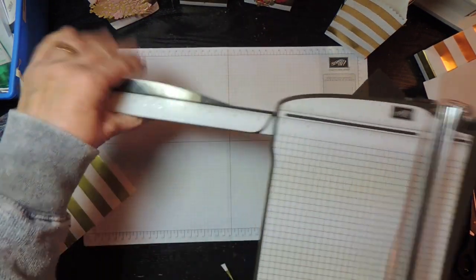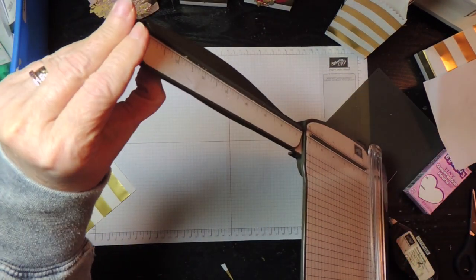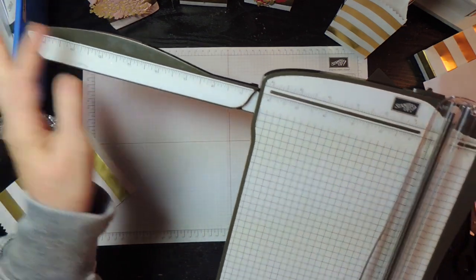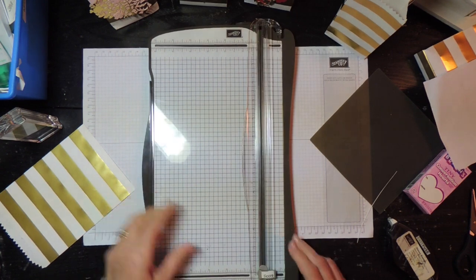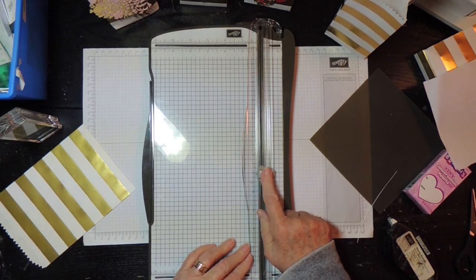We've got a nice extension here and it even stays up straight with this little clip on the bottom. It goes out to 12 inches and also, which is important for today, has a scoring blade.